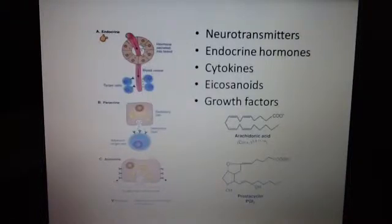First, we have endocrine hormones which are secreted in the blood and act far away on target cells. Then we have paracrine signaling molecules which act locally, so they're not going into the bloodstream.